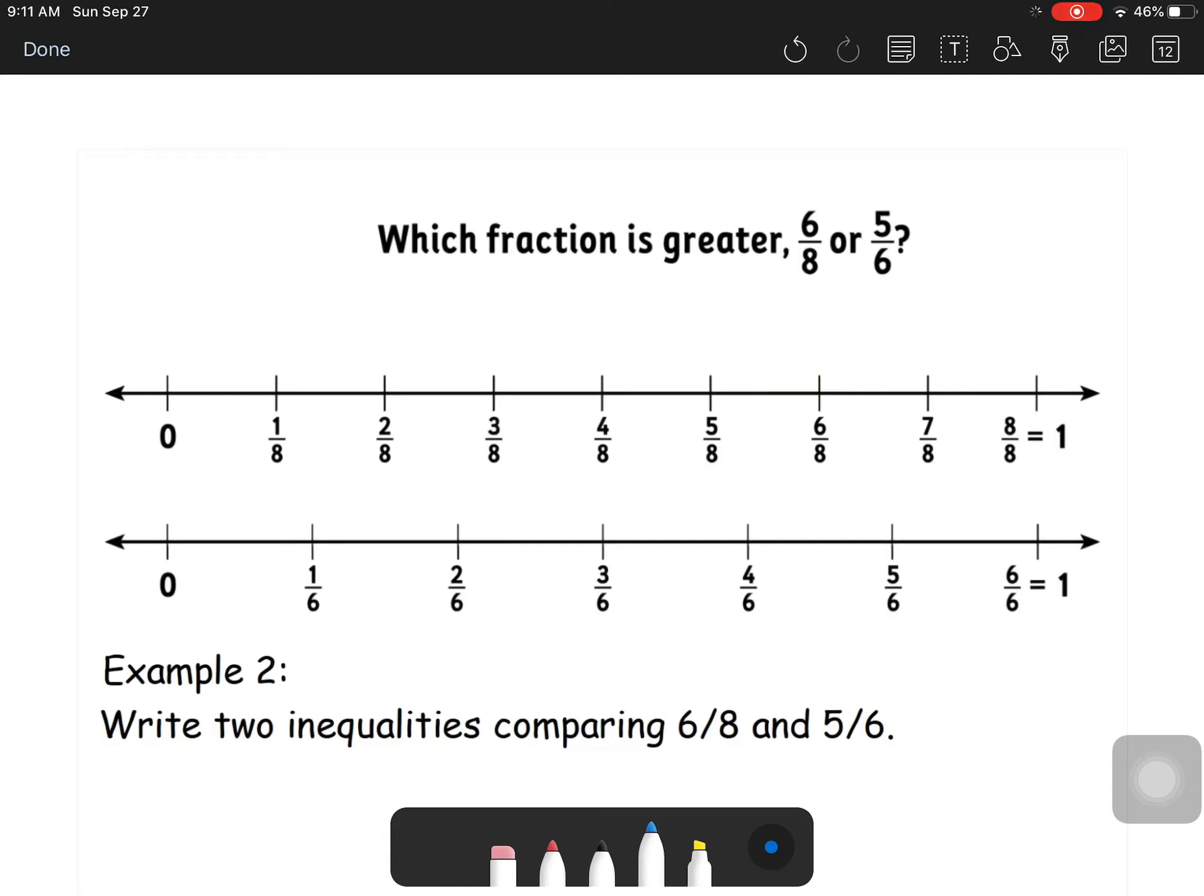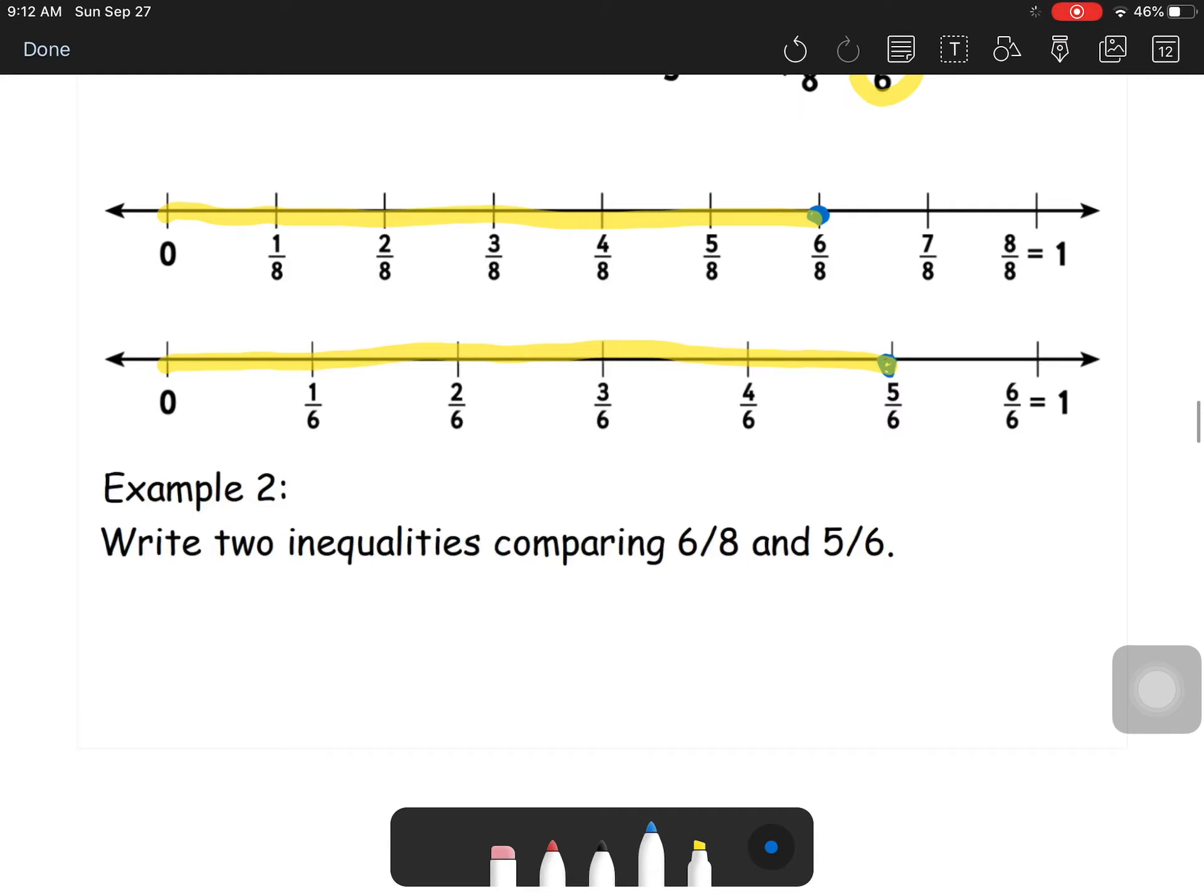So which fraction is greater, 6/8 or 5/6? What we have here are two number lines set up for us. And we can use those to determine which one's greater. So if I mark 6/8 right here, and then 5/6 right here. So 6/8 goes all the way there. 5/6 goes all the way to there. 5/6 is bigger. So 5/6 is the larger fraction out of that. So we have to write two inequalities. So we could either say that 5/6 is greater than 6/8, or 6/8 is less than 5/6. They're both true.